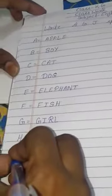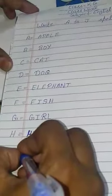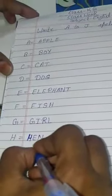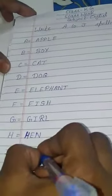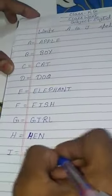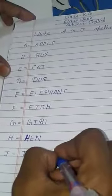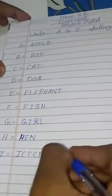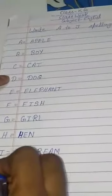I equal I, C, E, C, R, E, A, M. Ice cream, ice cream means ice cream.